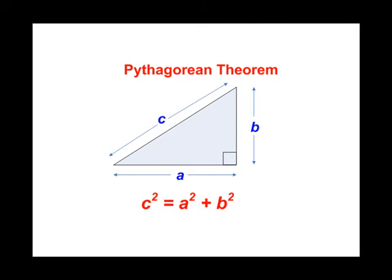As a reminder, the Pythagorean Theorem involves computing the length of the hypotenuse of a right triangle. The hypotenuse of a right triangle can be computed from the formula c squared equals a squared plus b squared, where c is the length of the hypotenuse, and a and b are the lengths of the other two sides of a right triangle.